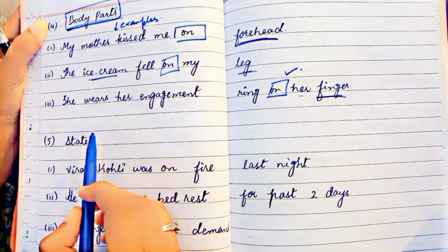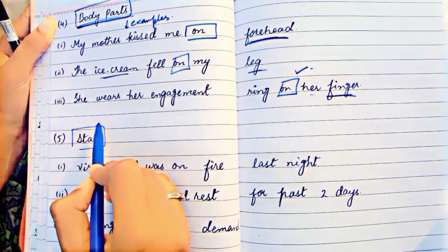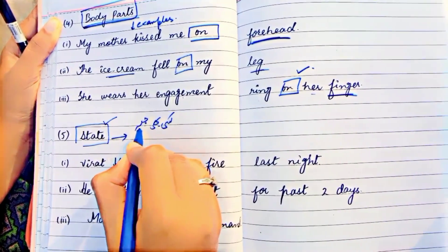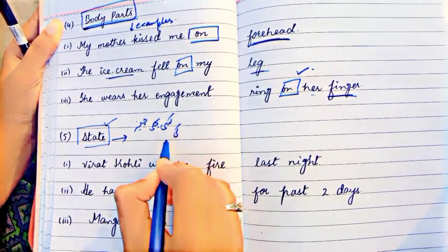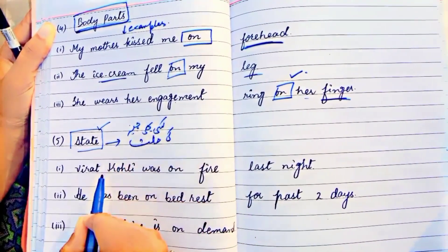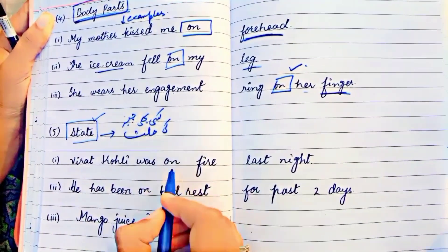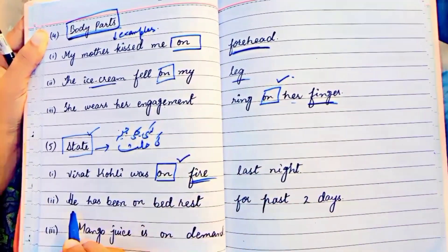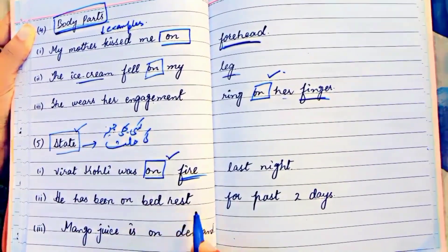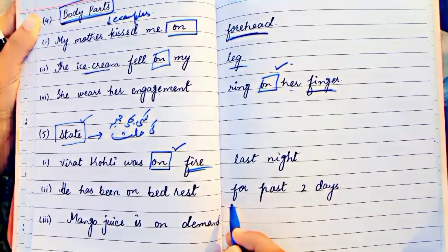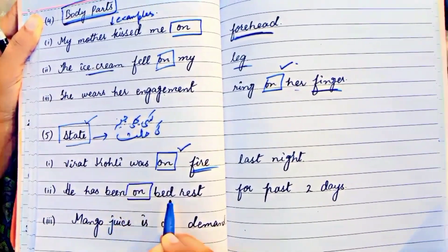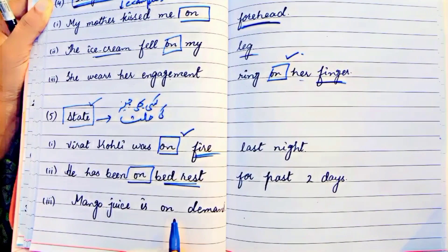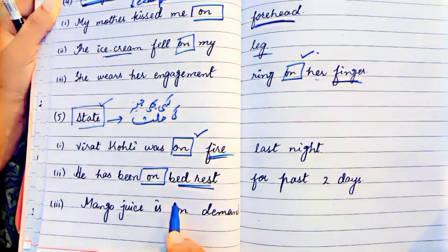Number five, state — when we describe the condition of anything: 'Virat Kohli was on fire last night' — fire describes a state. 'He was on bed rest for the past two days' — bed rest is a state, so we use ON. 'Mango juice is on demand' — ON is used here to describe the state of demand.